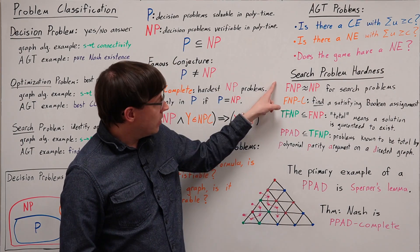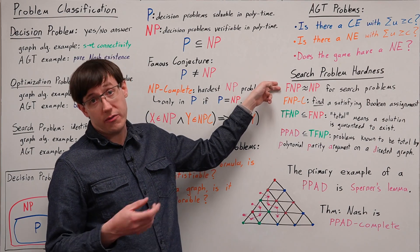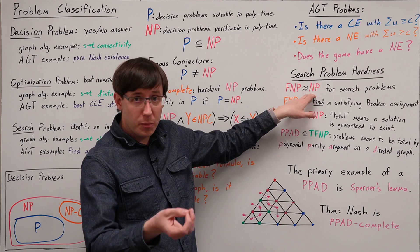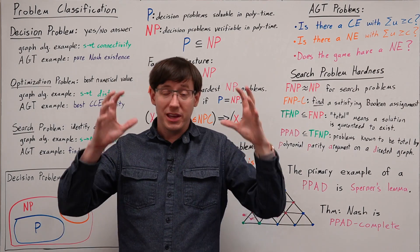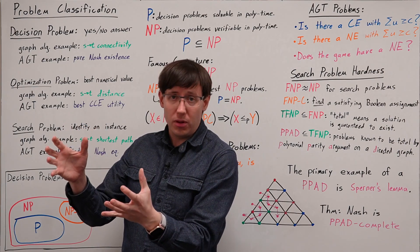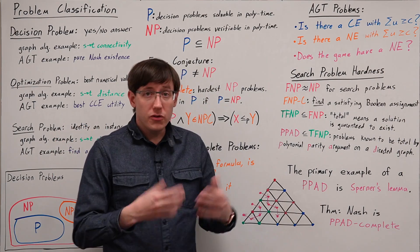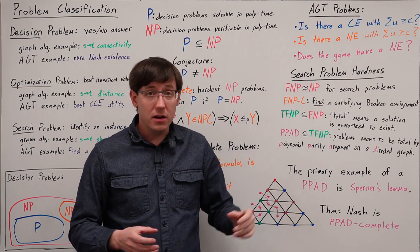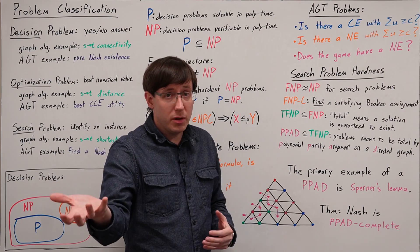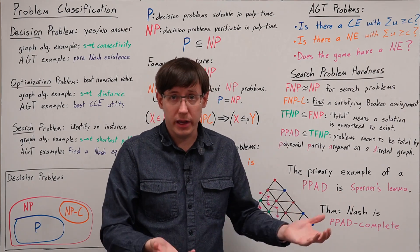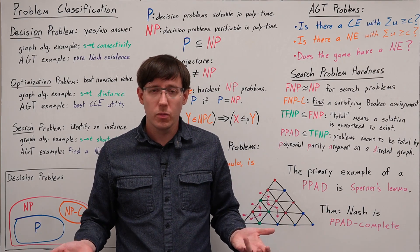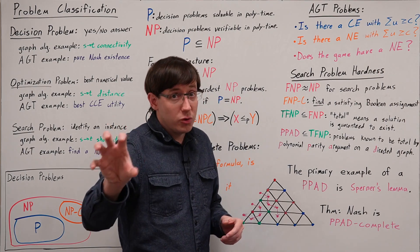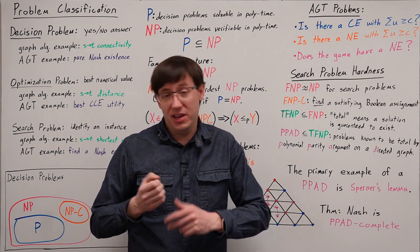To get a handle on the complexity of finding a Nash equilibrium, we need slightly different definitions that let us actually reason about the complexity of the search problem, not just the decision problem. That leads us to these complexity classes starting with FNP. We can think of FNP as the equivalent of NP for problems where we want to actually find a specific example, not just determine yes or no. So clearly the Nash problem lives in the set FNP, because if I know the Nash equilibrium of the game, I can verify it efficiently by checking that nobody wants to deviate.